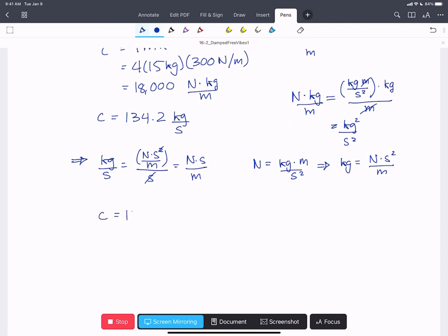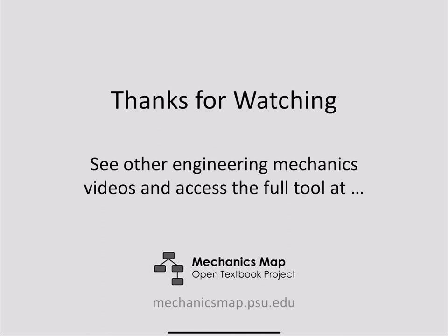So C equals 134.2 newtons times seconds per meter. Thanks for watching this video. Find more videos and material at Mechanics Map.